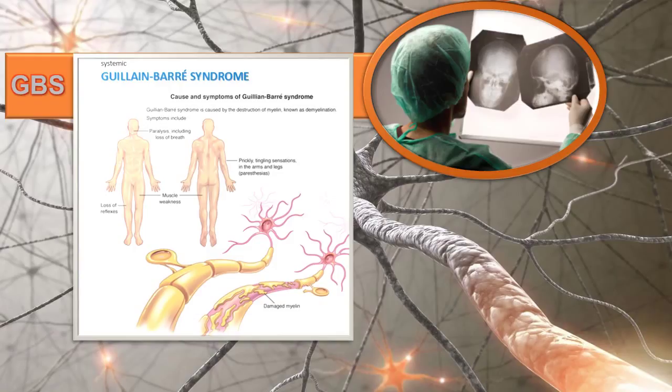There are three stages that make up the disease process. There's the acute course which can last between one to four weeks, measured by when no further deterioration is happening. Then there's a plateau period and then the recovery phase. There's no clinical or lab finding that confirms the diagnosis, but an increase in CSF protein level without an increase in cell count is a distinguishing feature, though this may not be noted in the first one to two weeks of illness.